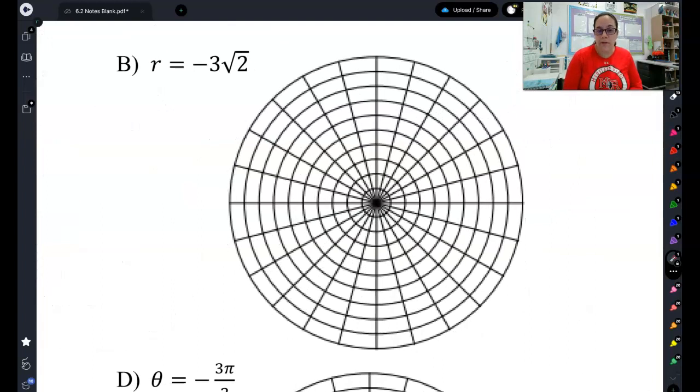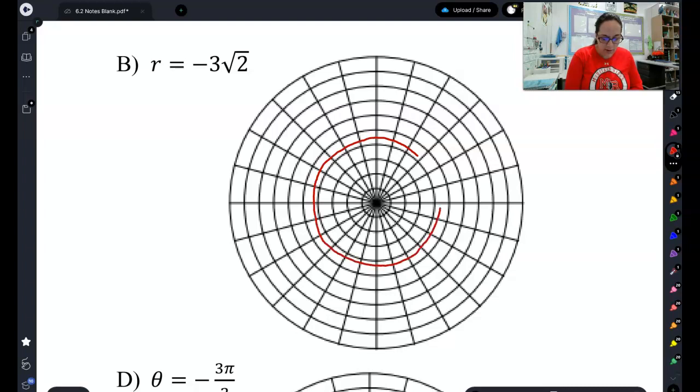So what about if r is negative? r equals negative 3 root 2. Well, it's actually going to be the exact same process. So even if r is negative, it's still going to be graphed as a circle that has a radius of 3 root 2. If you put 3 root 2 into your calculator, you get a decimal that's a little bit more than 4. I'm going to go a little bit more than 4 and draw my circle. So even if the radius is negative, it's still just graphed as a circle with that radius.